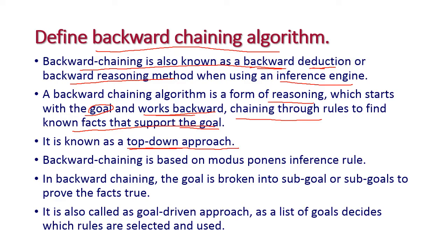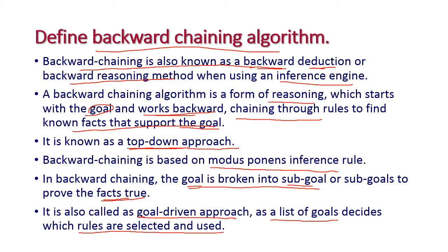The backward chaining algorithm is based on the modus ponens inference rule. The main goal is broken into sub-goals to prove the facts true. It is also called a goal-driven approach because it starts from the goal as a list of goals and decides which rules are selected and used next.